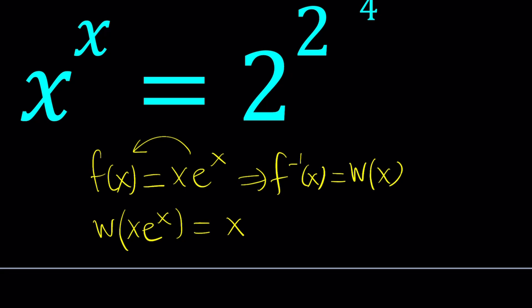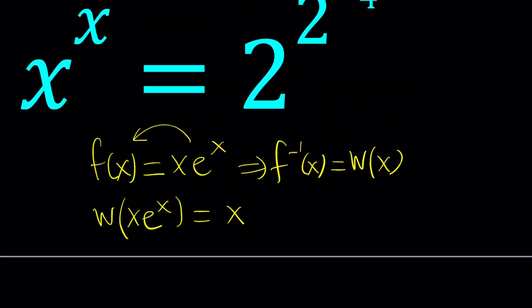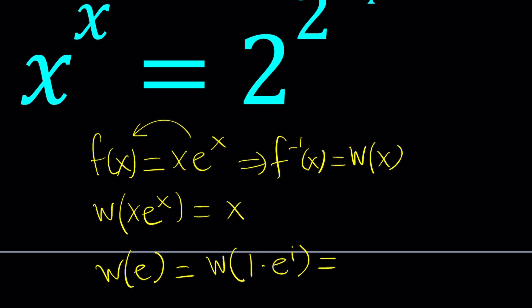For example, what is Lambert's W of e? Well, I can write this as Lambert's W of 1 times e to the power 1 and then from here you see that our x value is 1 so this is going to equal 1.